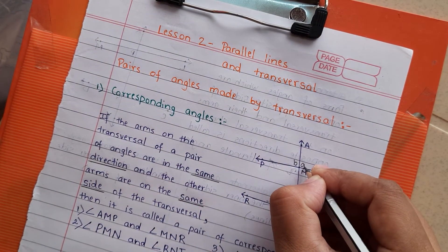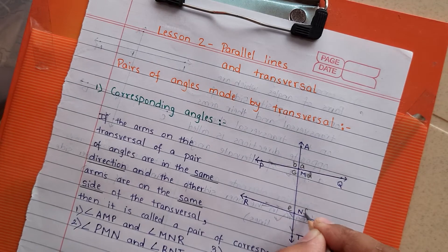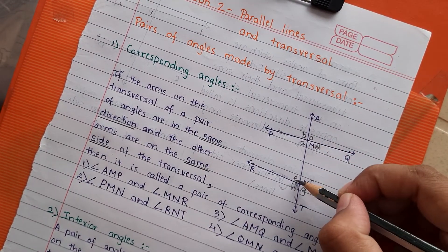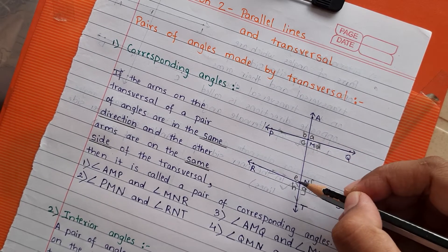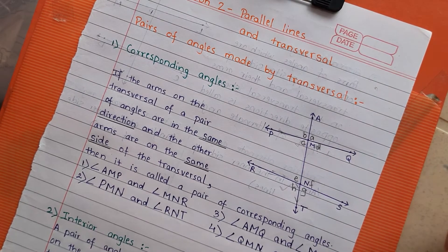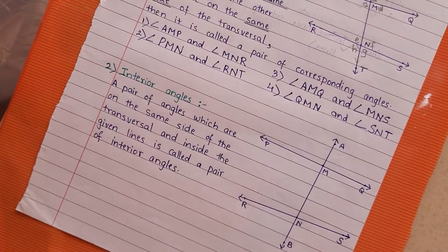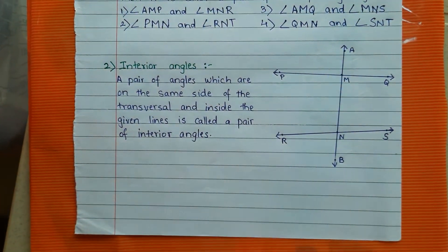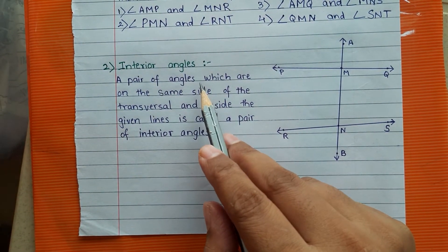Once again using shortcut names — the eight angles are A, B, C, D and E, F, G, H. So B and E are corresponding, C and H are corresponding, A and F are corresponding, and D and G are corresponding. These are the four pairs of corresponding angles.